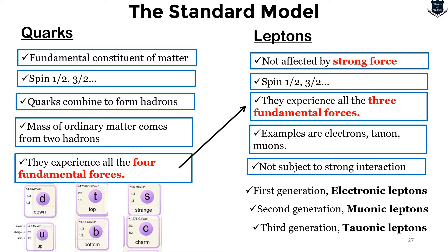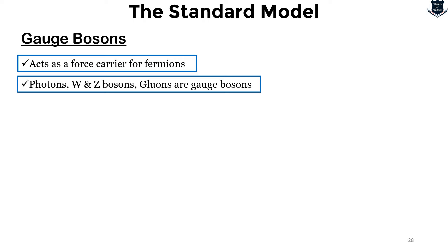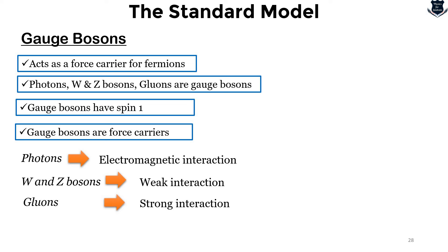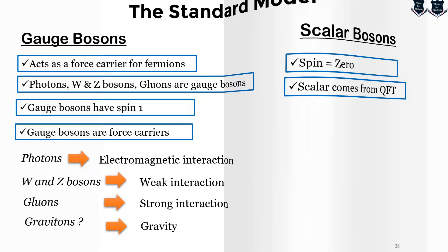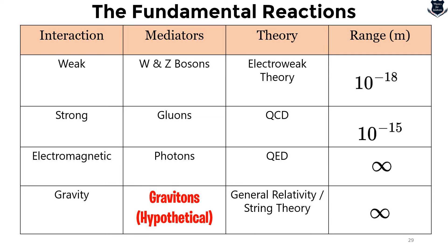Gauge bosons act as carriers — fermions interact through what are called gauge bosons. Photons, W and Z bosons, and gluons are gauge bosons, all with spin 1. Photons carry electromagnetic interaction; W and Z bosons carry weak interaction; gluons carry strong interaction. Gravity is supposed to be mediated by the hypothetical particle graviton, which has not yet been discovered. Here is a summary: all these gauge bosons have positive integer spins, and gravitons marked in red have not yet been found.